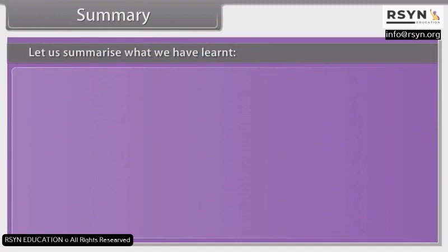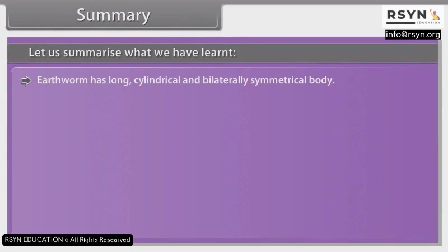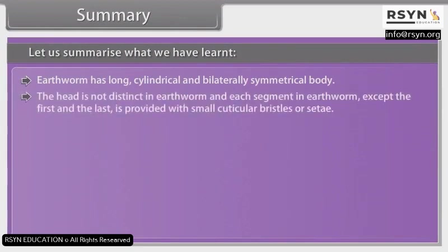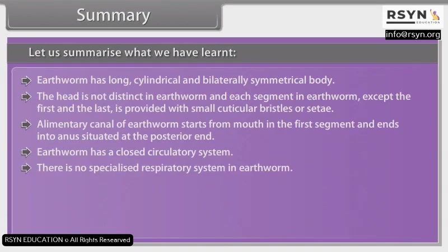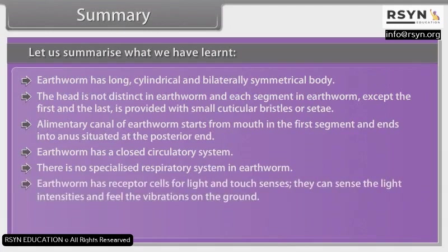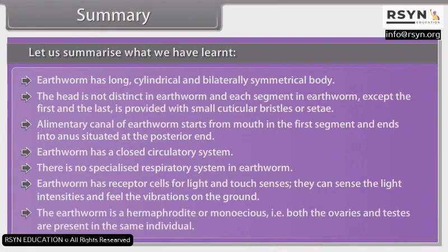Summary: Earthworm has a long, cylindrical and bilaterally symmetrical body. The head is not distinct in earthworm, and each segment except the first and the last is provided with small cuticular bristles or setae. The alimentary canal starts from the mouth in the first segment and ends at the anus at the posterior end. Earthworm has a closed circulatory system. There is no specialized respiratory system in earthworm. Earthworm has receptor cells for light and touch and can sense light intensities and feel vibrations on the ground. The earthworm is a hermaphrodite — both ovaries and testes are present in the same individual.